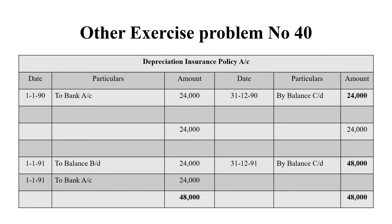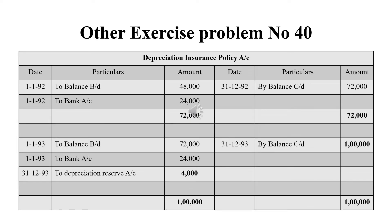If you want to pay the balance, you can pay the insurance company. So, 24,000 plus 24,000 is 48,000. The balance carried down on the credit side is 48,000, and the grand total is also 48,000. The previous year's balance brought down on 1/1/92 is 48,000.